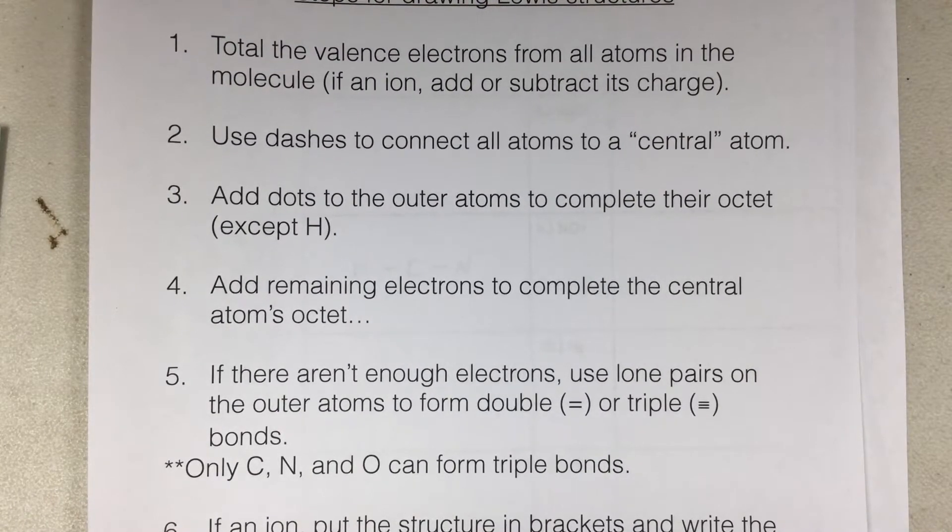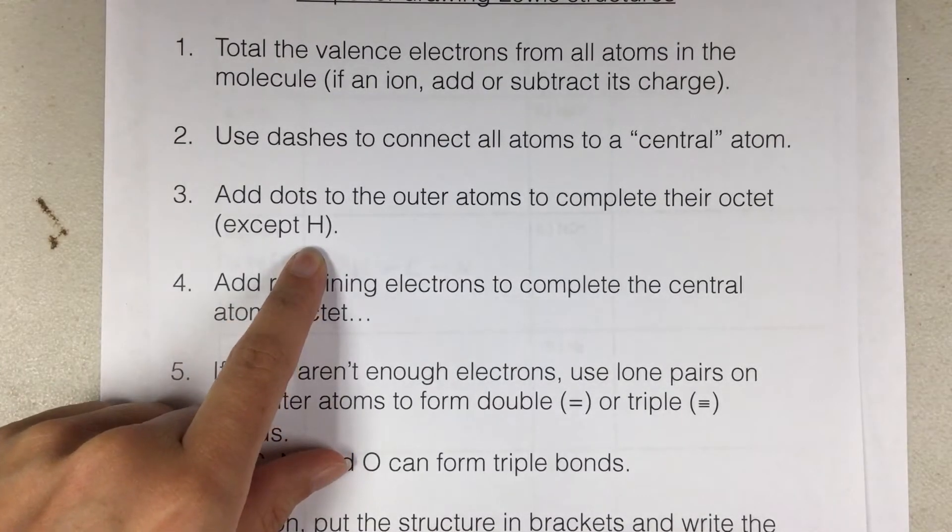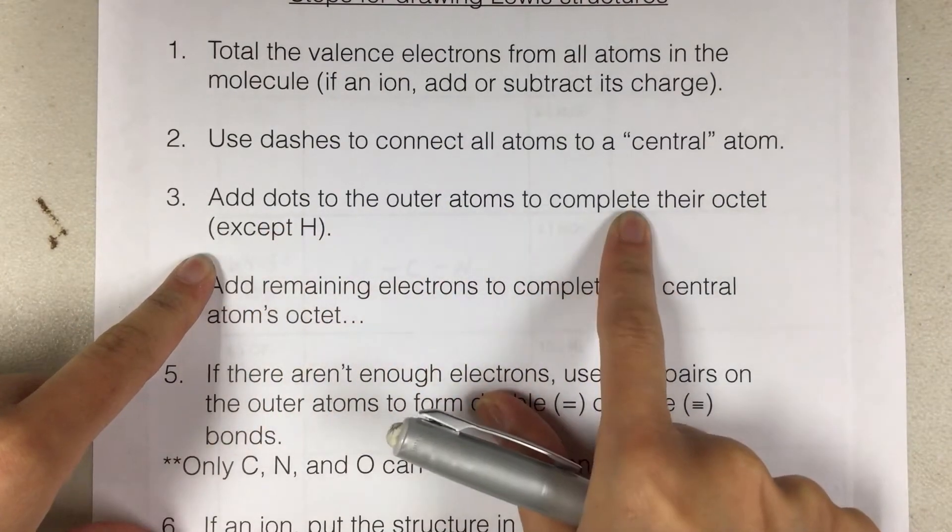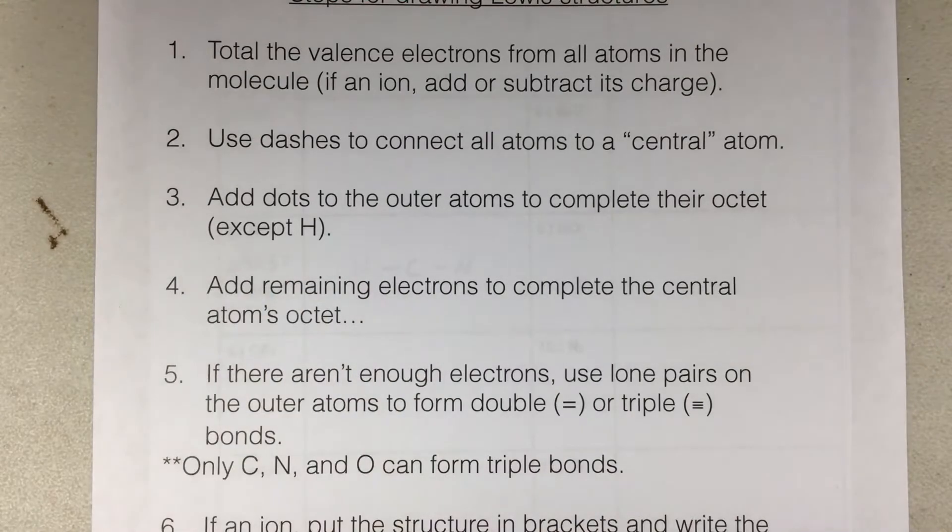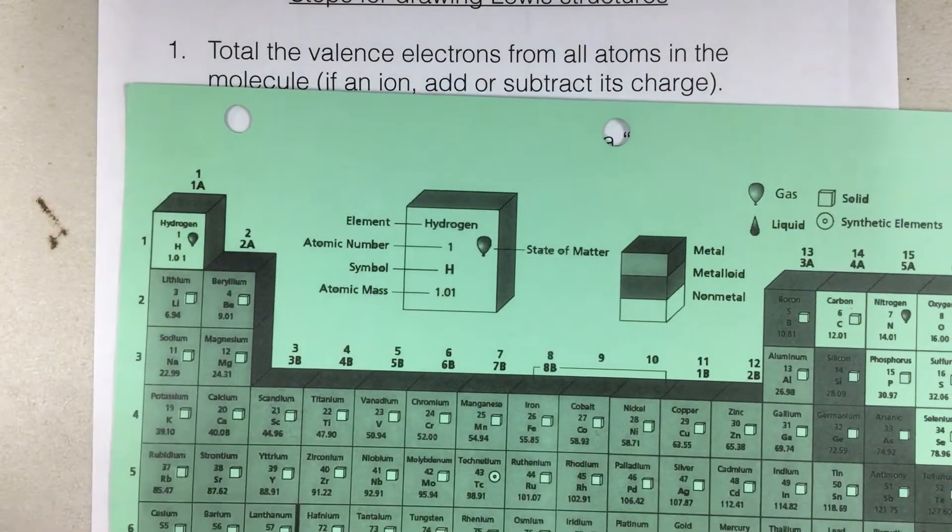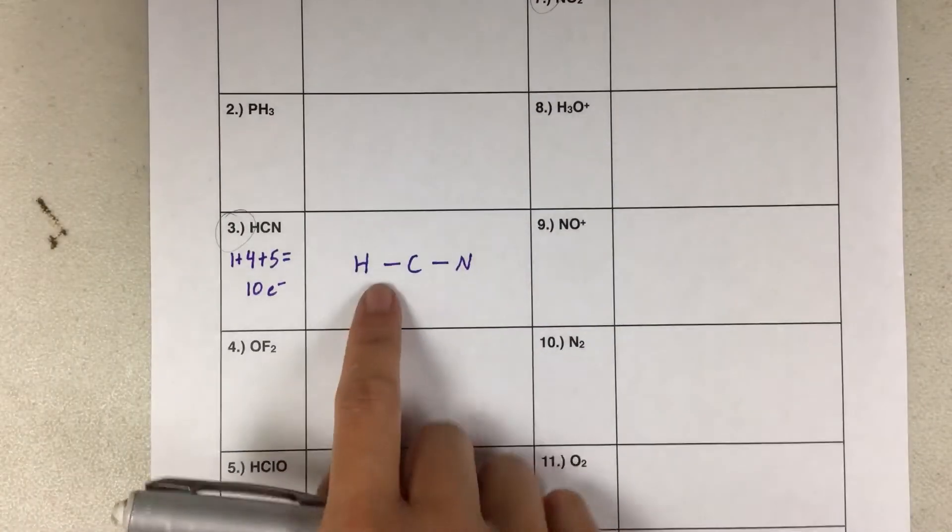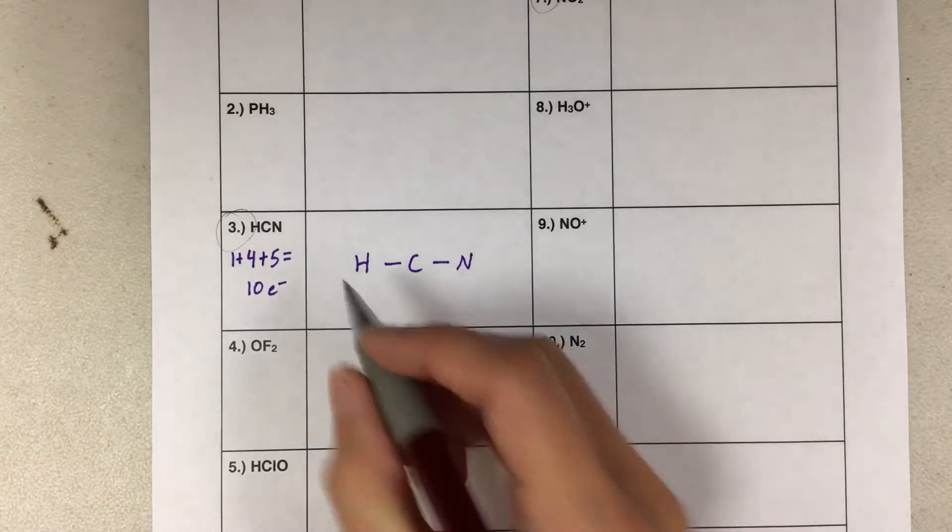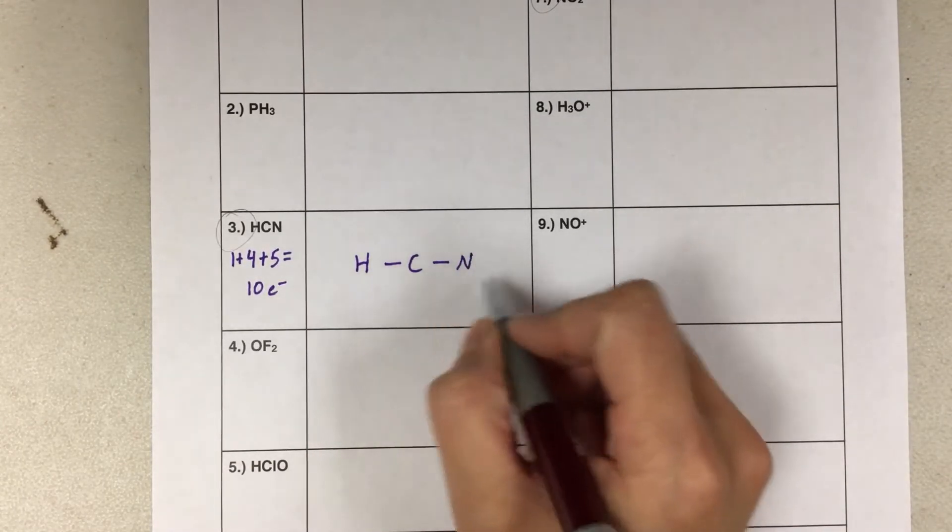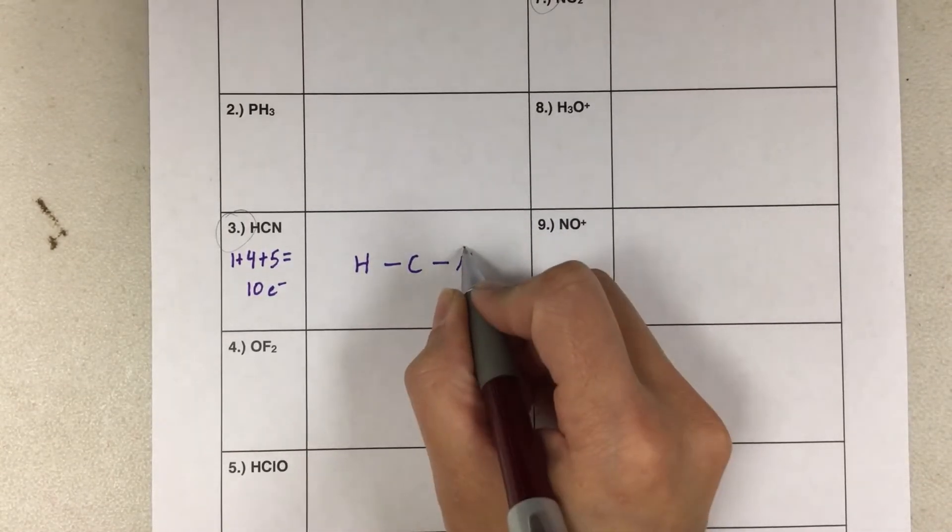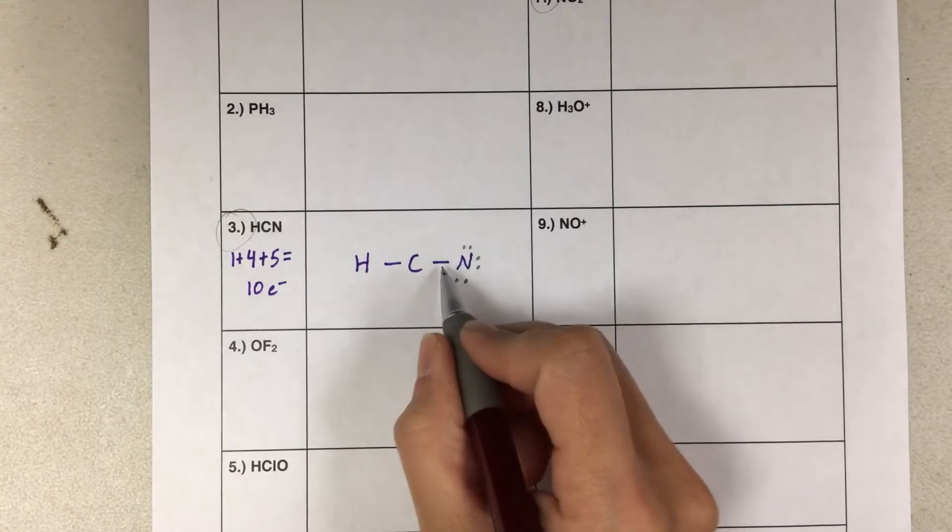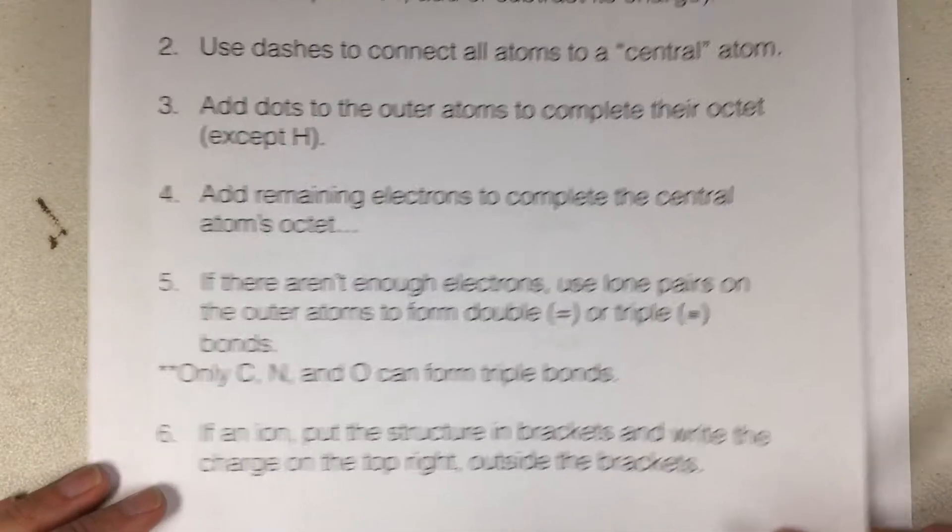Number three, add dots to the outer atoms to complete their octet, except for hydrogen. I'm going to switch to a pencil here. As we add dots to the outer atoms to complete their octet, we don't do this to hydrogen because hydrogen only needs two electrons to complete its valence shell. And each line represents two electrons. So hydrogen is done. You should never have dots around hydrogen. So ignoring hydrogen, we will add the electrons to nitrogen to complete its octet. So now this nitrogen has two, four, six, eight. It has a full octet.